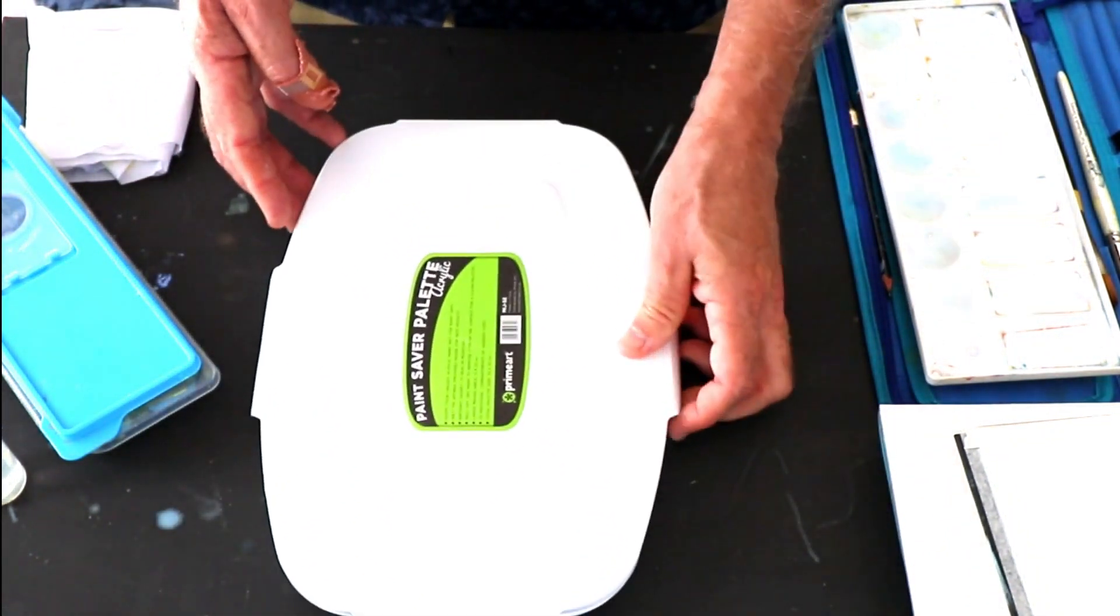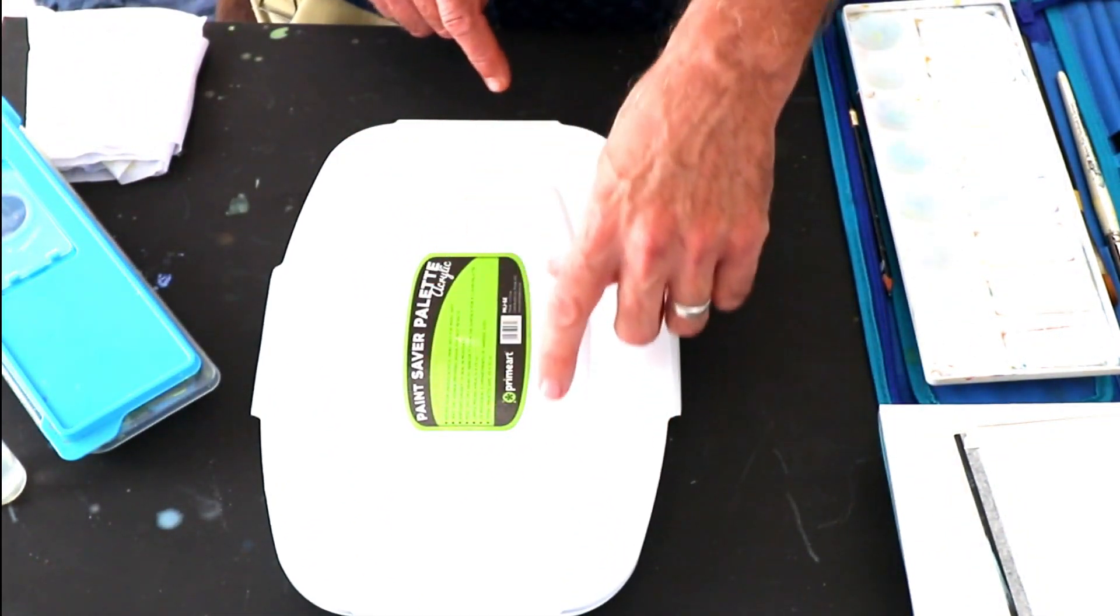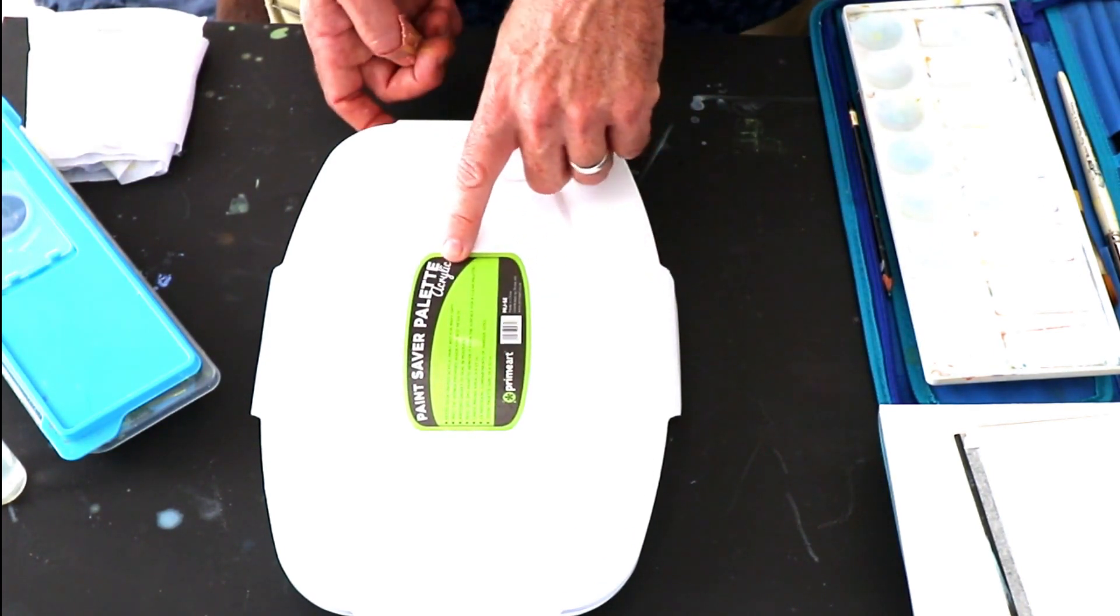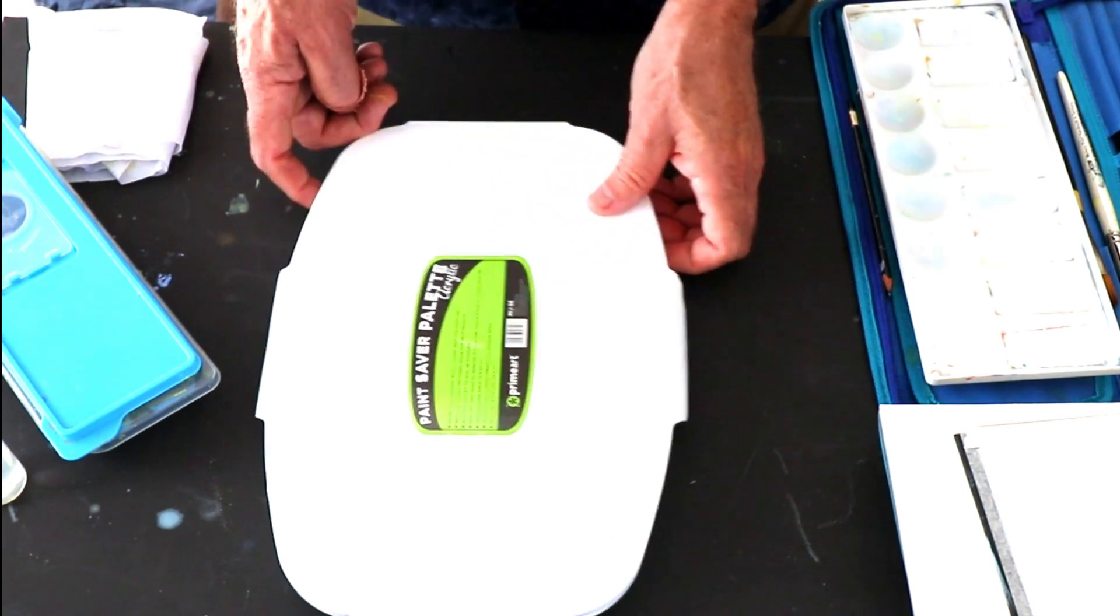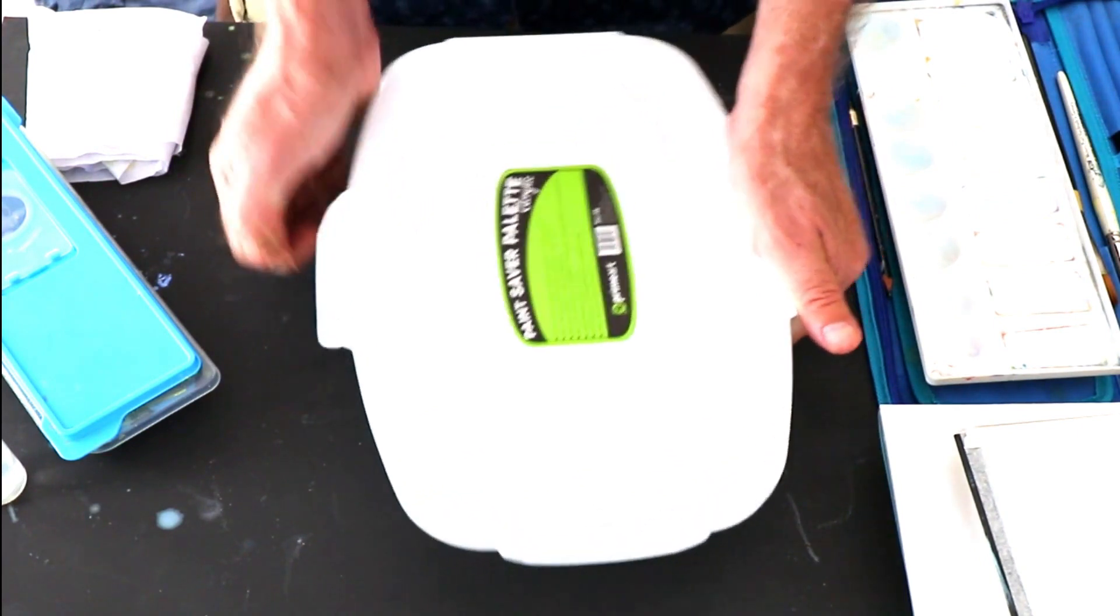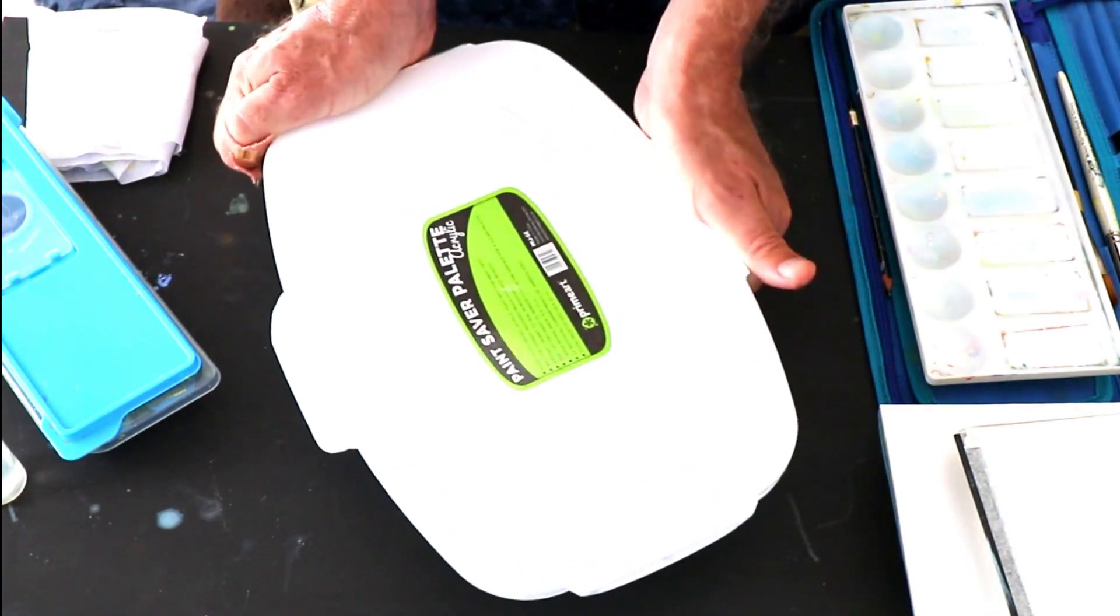This Paint Saver palette made by Prime Art might be just the thing. Says for acrylics but of course the problems that acrylic painters face is even more so with gouache because gouache dries really quickly.